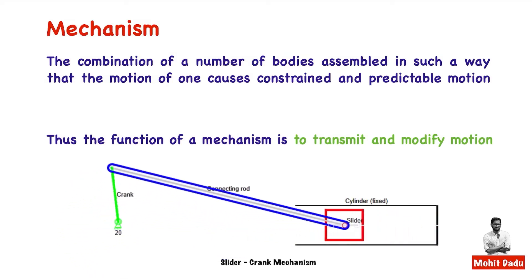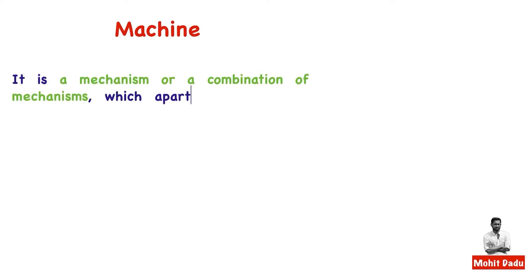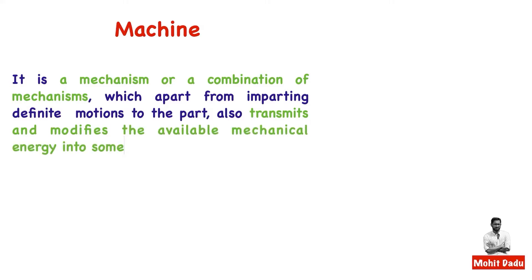Now we will see what is a machine. A machine is simply a mechanism or combination of mechanisms where, apart from the transmission and modification of motion, there is also transmission and modification of energy happening. We have already discussed the slider-crank mechanism.